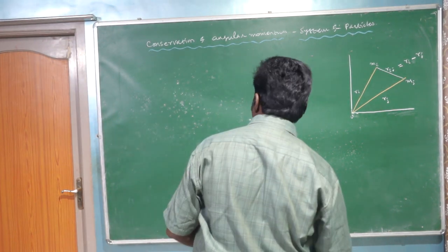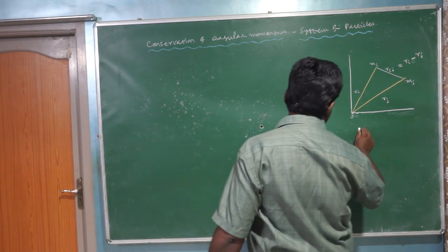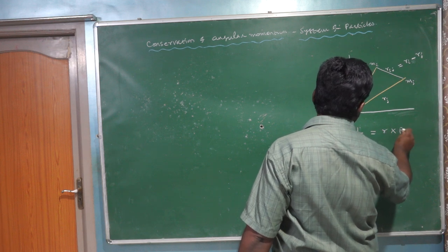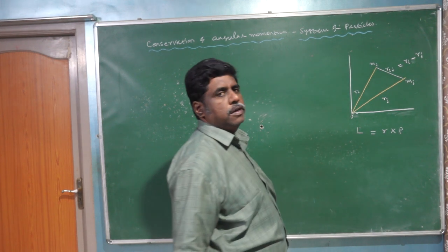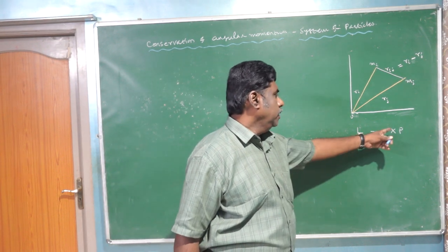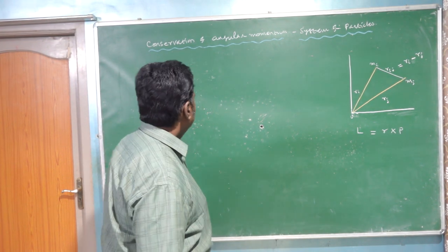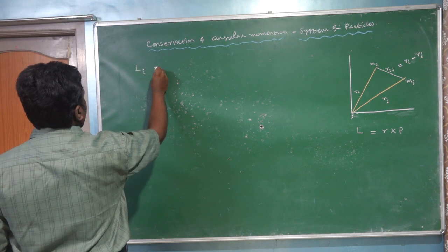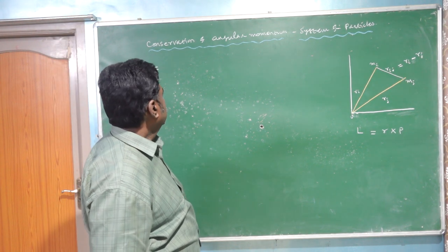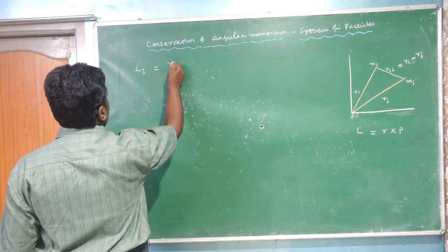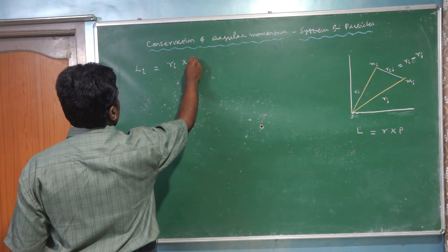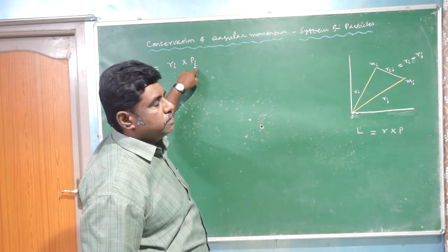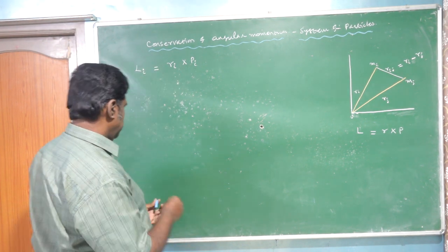The value of angular momentum in general is given by the formula L equal to r cross p, where r is the position and p is the linear momentum. Suppose the angular momentum of the i-th particle is taken: L_i equal to r_i cross p_i. Here r_i is the position of the i-th particle and p_i represents the linear momentum of the i-th particle.